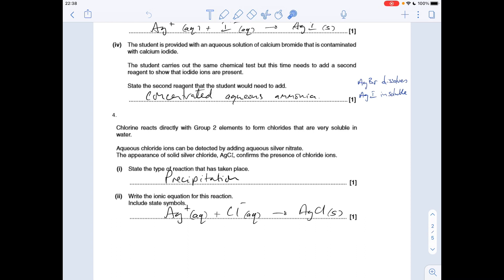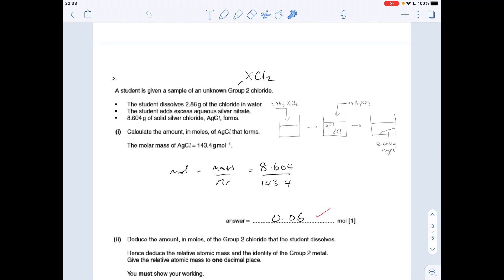First part of question four: the type of reaction that takes place when silver ions are added to test for chloride ions is a precipitation reaction. And the ion equation for the formation of silver chloride is that one there.